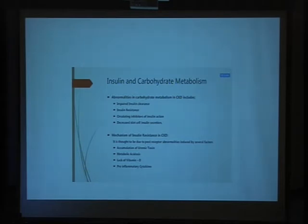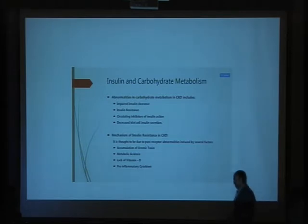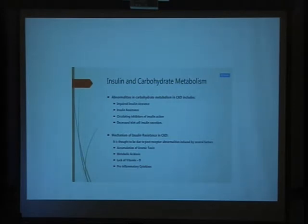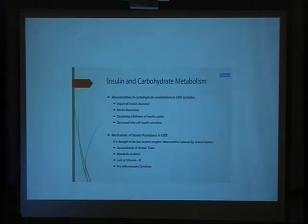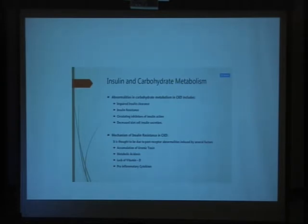In short, there is disturbance in carbohydrate metabolism in chronic kidney disease, and also disturbance in insulin metabolism. There is impaired insulin clearance, decreased uptake of glucose by muscle and adipose tissue in patients with chronic kidney disease, decreased secretion of endogenous glucose by the kidney, and decreased beta-cell function in patients with chronic kidney disease.